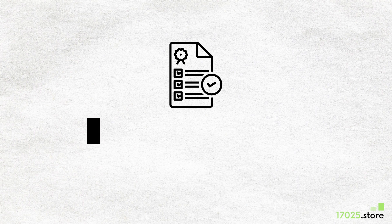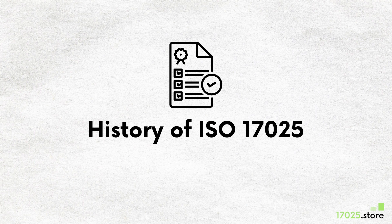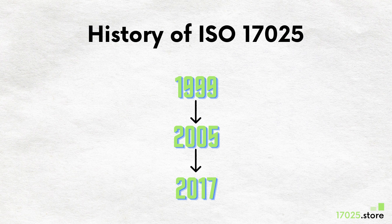History of ISO-17025: There are three releases of ISO-17025, issued in 1999, 2005, and 2017.